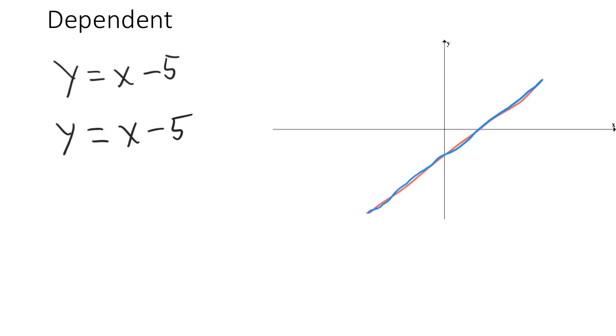So what does that mean about the solutions to the system? Well, a solution corresponds to a point of intersection of the two lines. Since these lines lie right on top of each other, they intersect at every single point. That's an infinite number of intersection points. Therefore, this system has an infinite number of solutions.